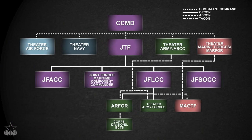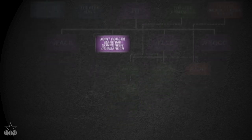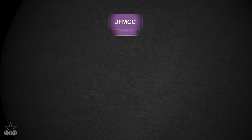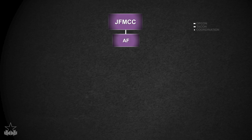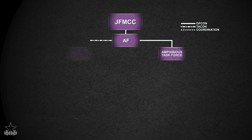Like the JFLIC, a Joint Force Maritime Component Command, or JFMCC, charged with planning an amphibious assault, designates command relationships that promote cooperation and maintain a clear unity of command. To facilitate unity of command, forces conducting an amphibious operation are typically organized into an amphibious task force and a landing force under a common commander.